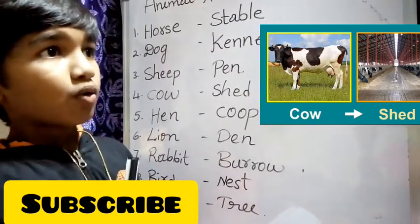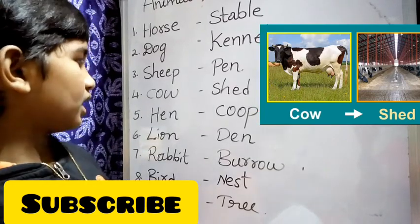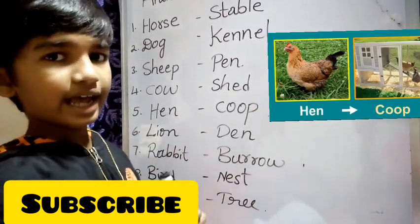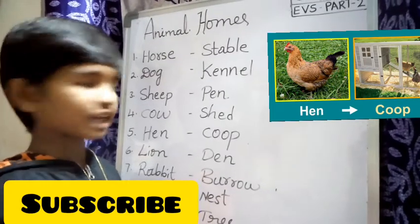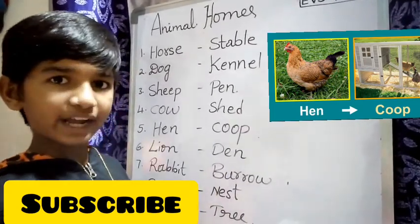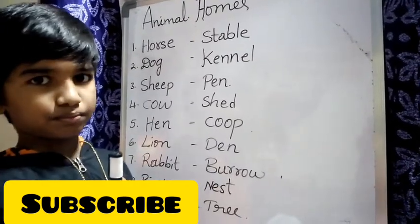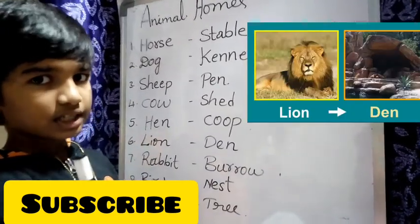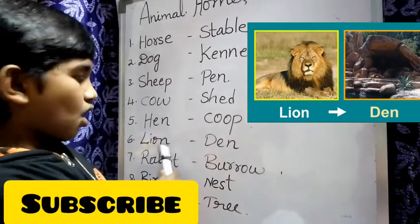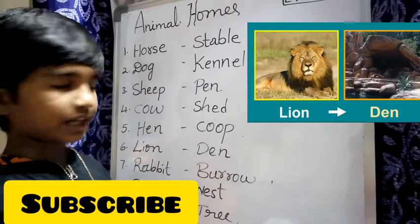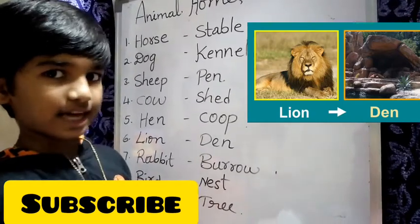Next — what is that picture? Yes. Hen. Hen lives in a coop. Next picture — what is that picture? Yes. Lion. Lion lives in a den.